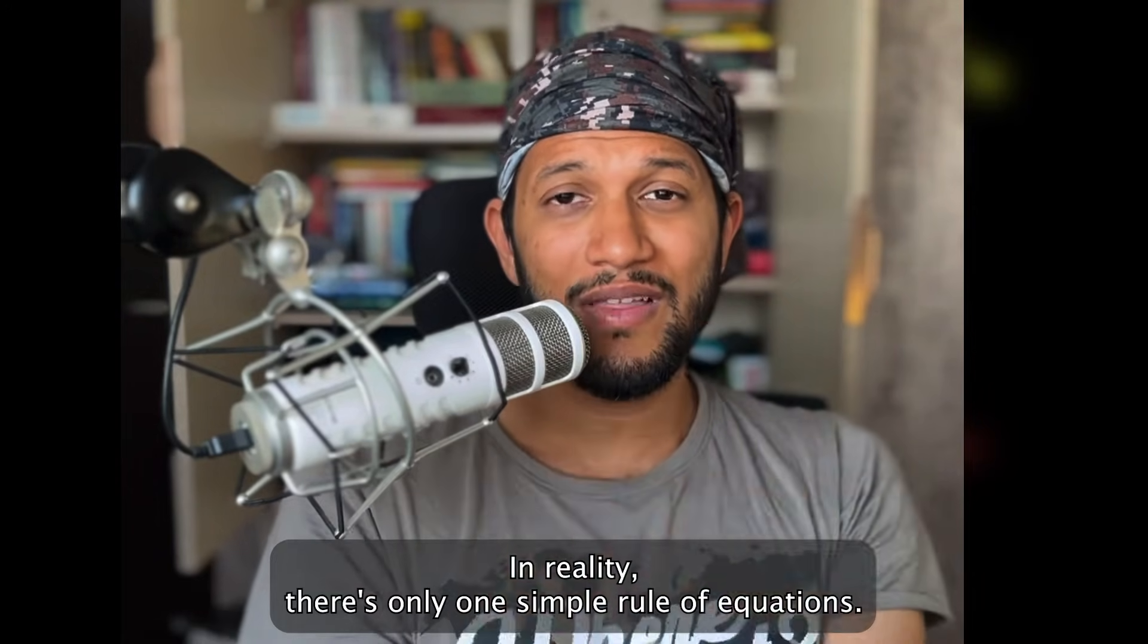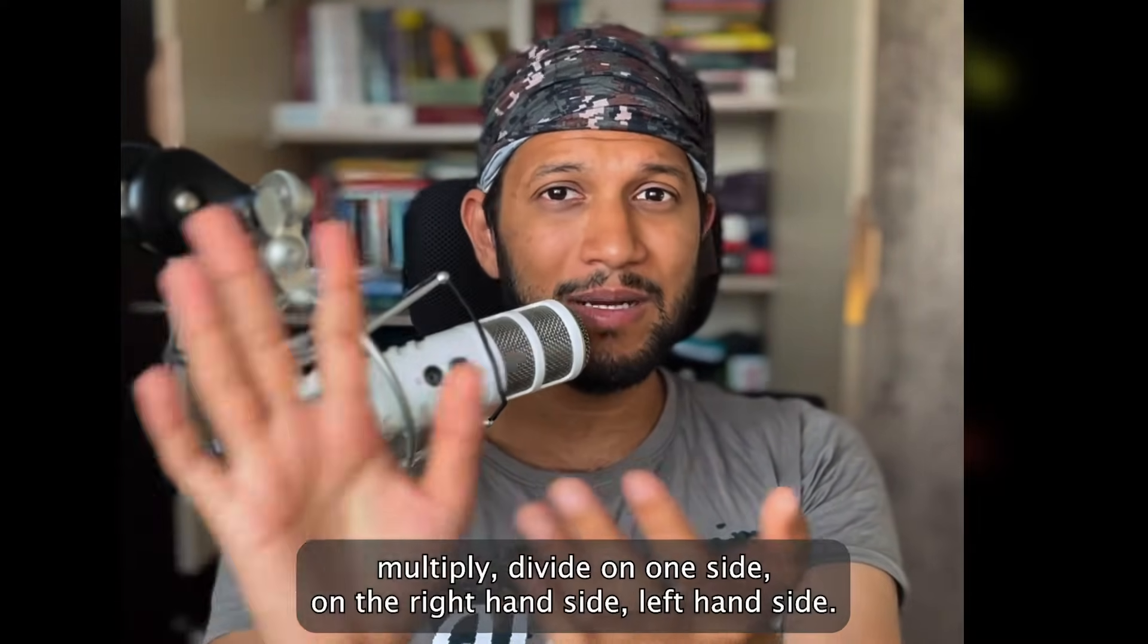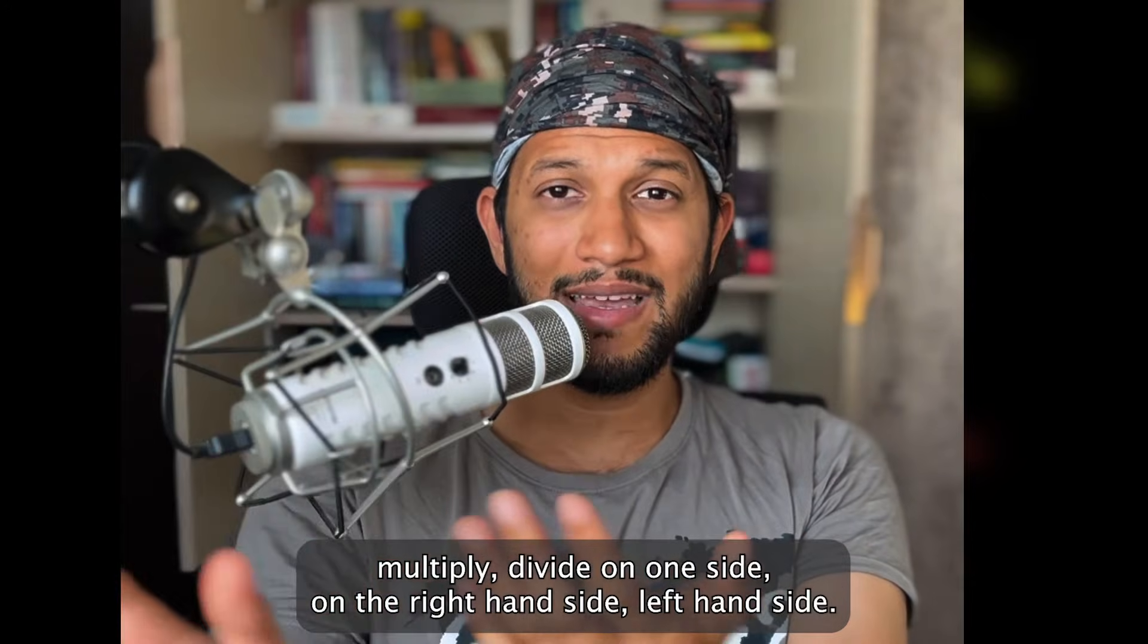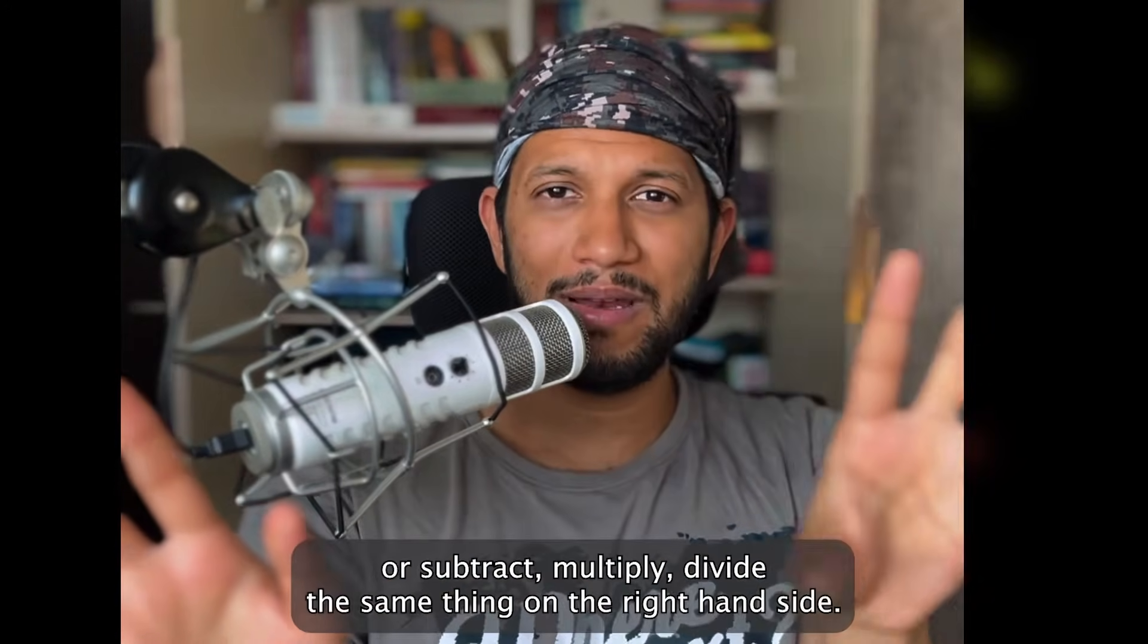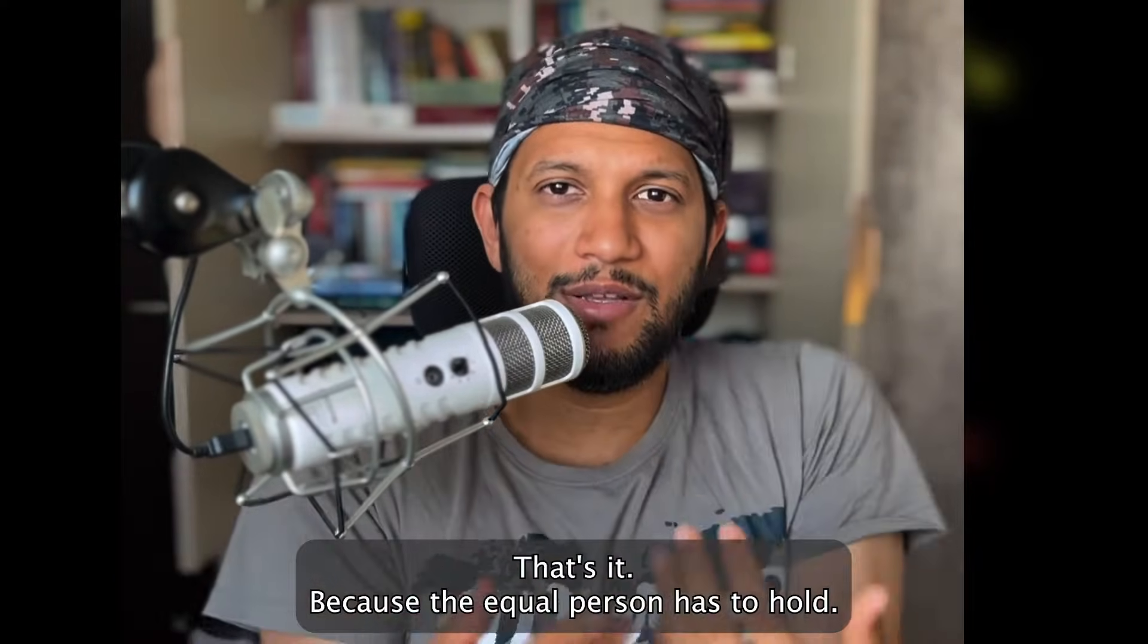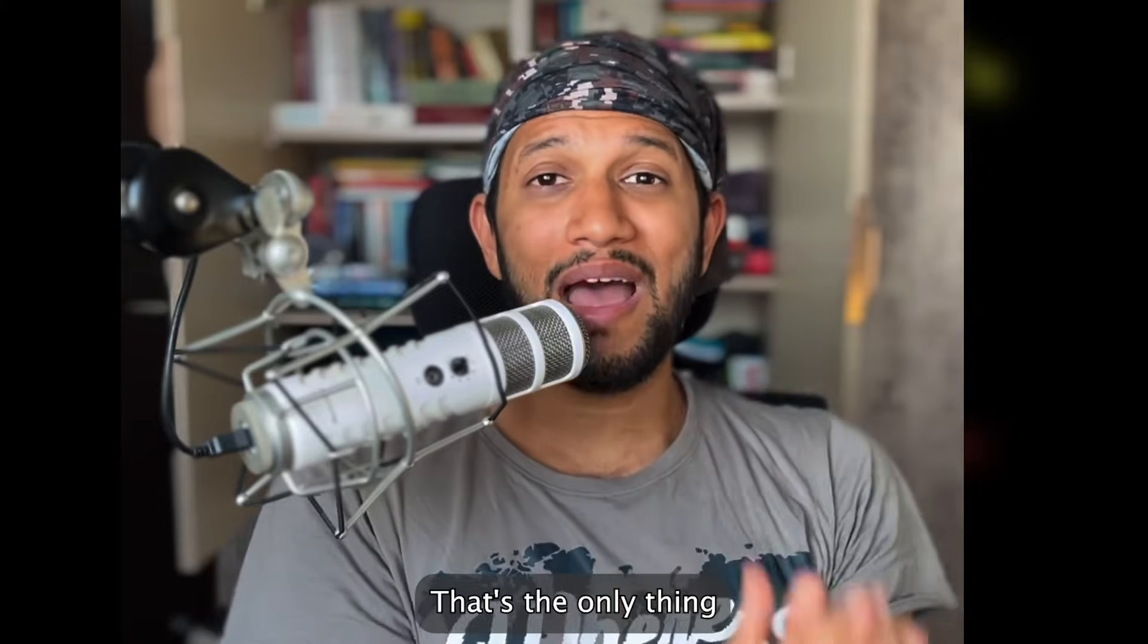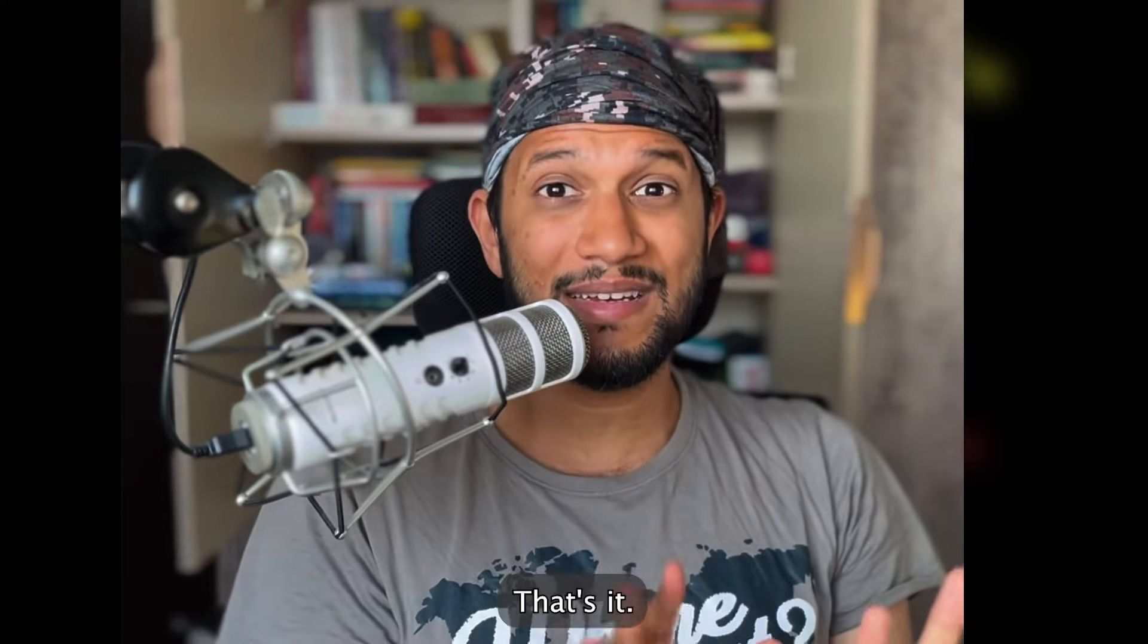In reality, there's only one simple rule of equations. If there's an equal to sign, then whatever you add, subtract, multiply, divide on one side, on the left hand side, let's say, you have to add, subtract, multiply and divide the same thing on the right hand side. That's it. Because the equal to sign has to hold. So that's the only thing you have to teach your kids when it comes to equations and algebra, at least introduction to algebra. That's it.